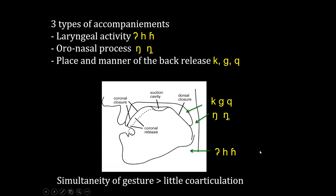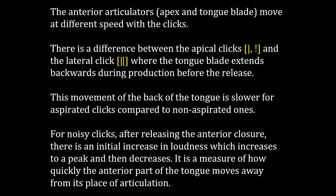An important feature of clicks is the similarity of gestures that results in little co-articulation. The anterior articulators — apex and tongue blade — move at different speeds with clicks. There is a difference between the apical clicks (dental and alveolar) and the lateral click, where the tongue blade extends backwards during production before release. This backward movement is slower for aspirated clicks compared to non-aspirated ones. For noisy clicks, after releasing the anterior closure, there is an initial increase in loudness that peaks and then decreases.